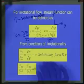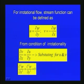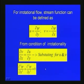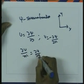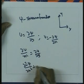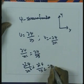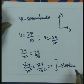From the condition of irrotationality, substituting ωz = 0, we have shown that ∂v/∂x = ∂u/∂y. Substituting for u and v from the stream function definitions, we get ∂²ψ/∂x² + ∂²ψ/∂y² = 0. This is another form of the Laplace equation, derived from the condition of irrotationality and the definition of the stream function.